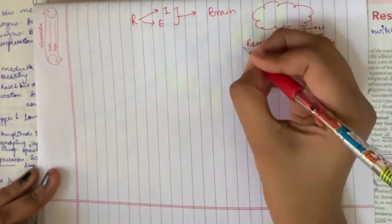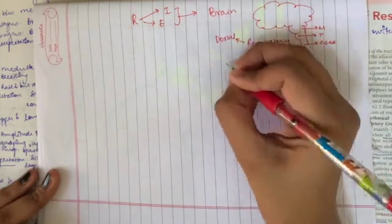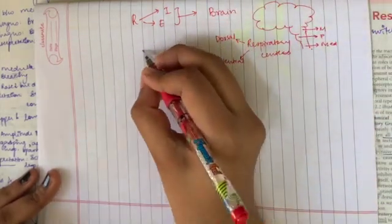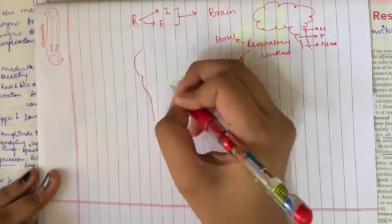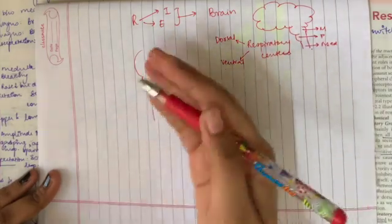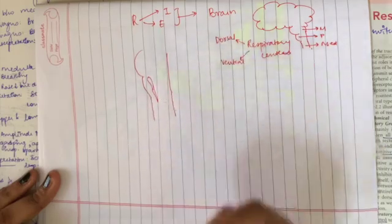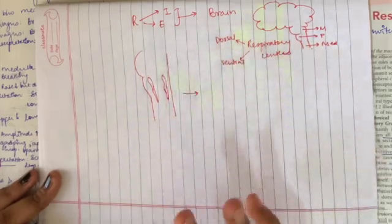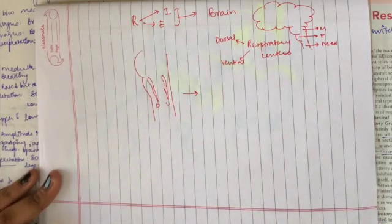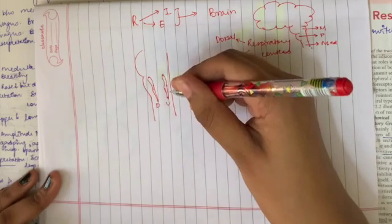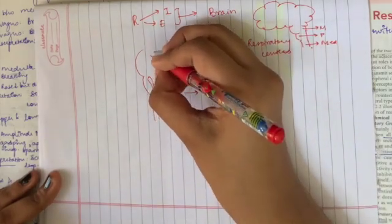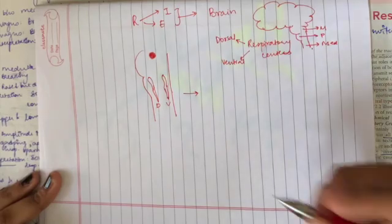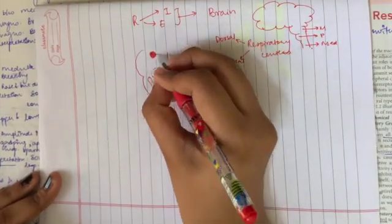Pons and medulla together have what we call the respiratory centers. There are two basic respiratory centers: one is the dorsal group and the other is the ventral group. Dorsal is behind and ventral is in the front. You also have something known as the pneumotaxic center, located on the superior portion of pons, and somewhere here you have the apneustic center.